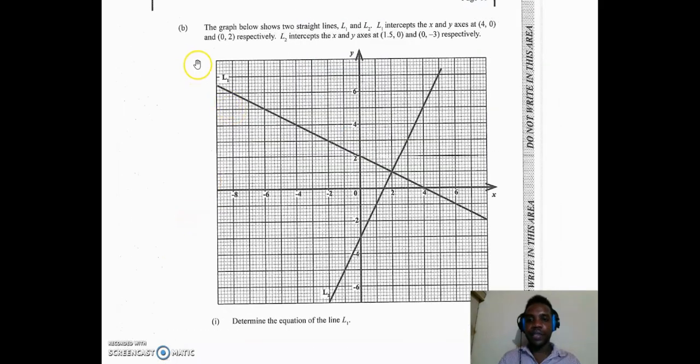We now move to question 4b, and it says the graph below shows two straight lines, L1 and L2. L1 intersects the x and y axes at 4, 0 and 0, 2 respectively. It means that it cuts the x-axis at point 4, 0 and the y-axis at 0, 2. L2 intersects the x and y axes at 1.5, 0 and 0, minus 3 respectively. As you can see from the diagram here, this is line 1, and this is line 2 here.